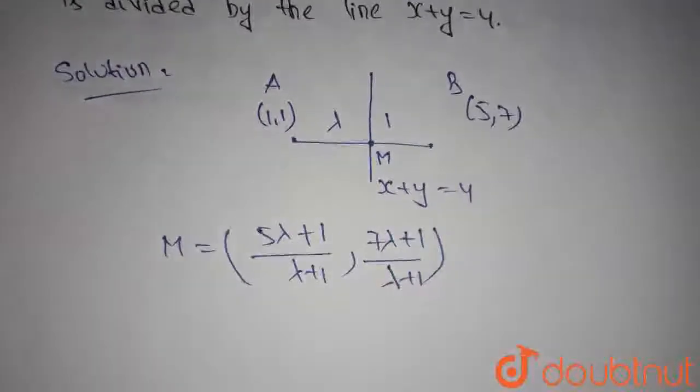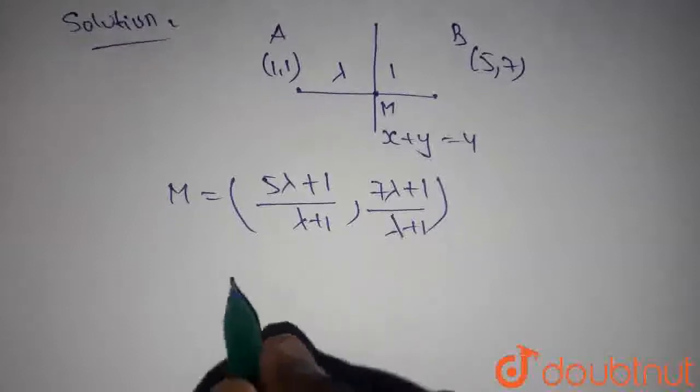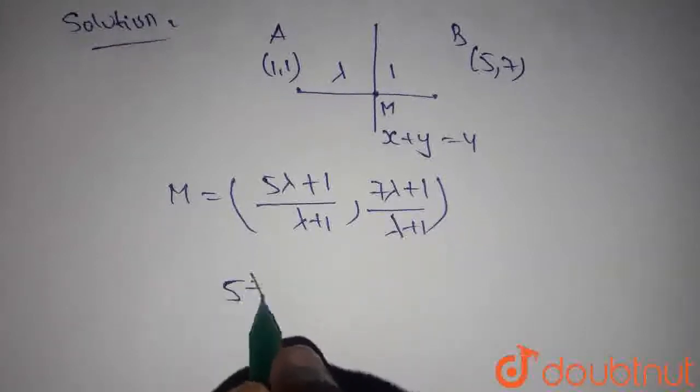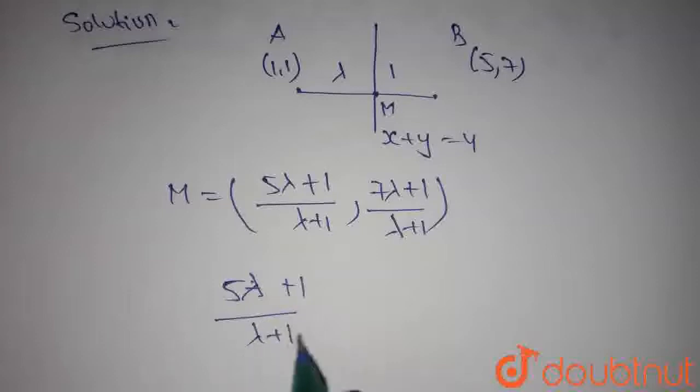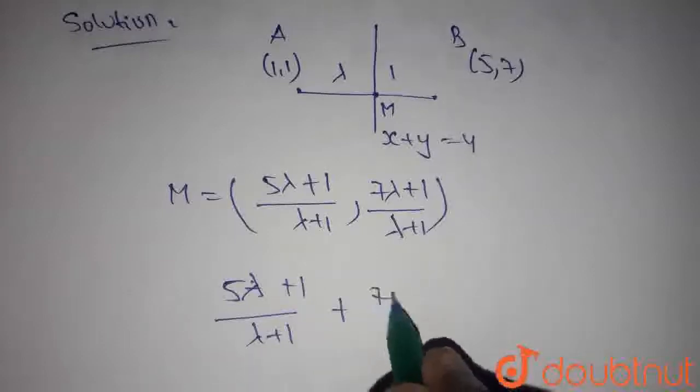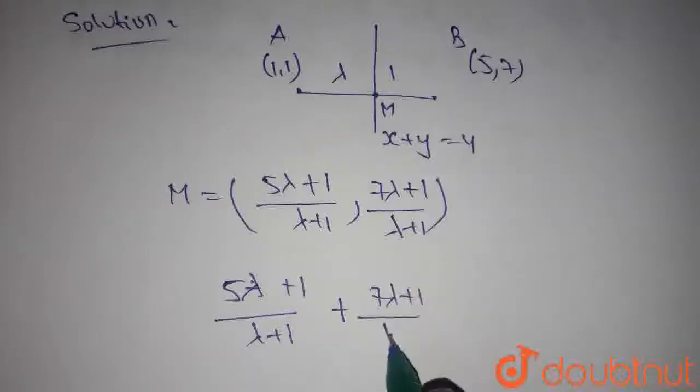this point should satisfy x plus y equals 4. So, substitute this point. We get (5 lambda plus 1) divided by (lambda plus 1) plus (7 lambda plus 1) divided by (lambda plus 1) equals 4.